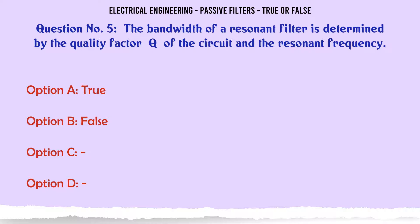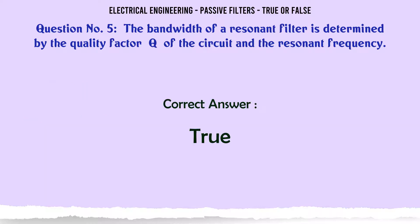The bandwidth of a resonant filter is determined by the quality factor Q of the circuit and the resonant frequency. A. True. B. False. The correct answer is: True.